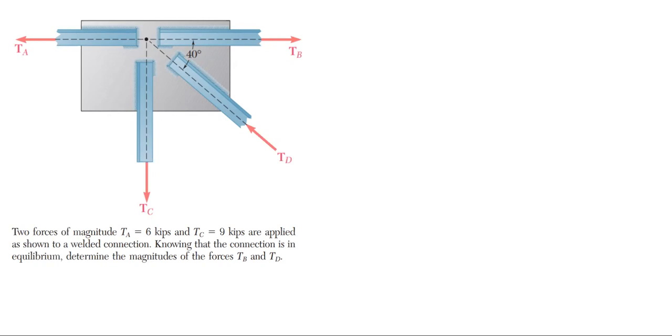We're going to work with this problem shown on screen. You have two forces of magnitude TA equals 6 kips and TC equals 9 kips applied as shown to a welded connection. Knowing that the connection is in equilibrium, determine the magnitudes of forces TB and TD.